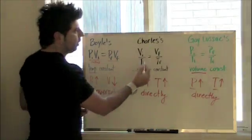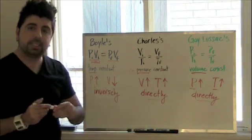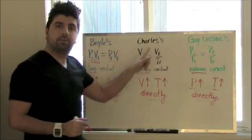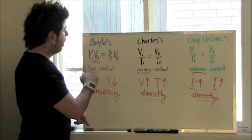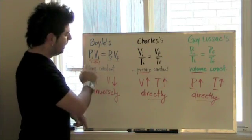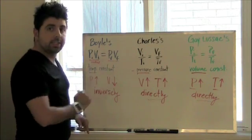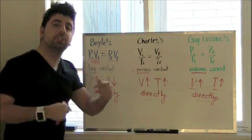So notice Charles and Gay-Lussac's are directly proportional, which means if one of these increases, so will the other. But with respect to Boyle's law, since they are being multiplied together, if one increases, the other one is going to decrease, hence the inversely proportional, the inverse of which the other one is going to happen.